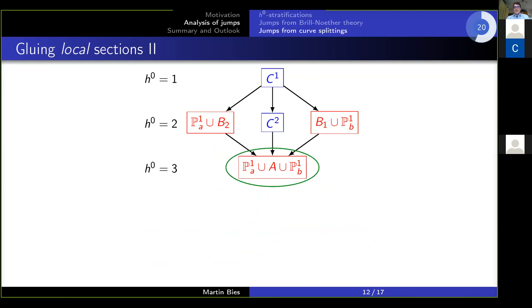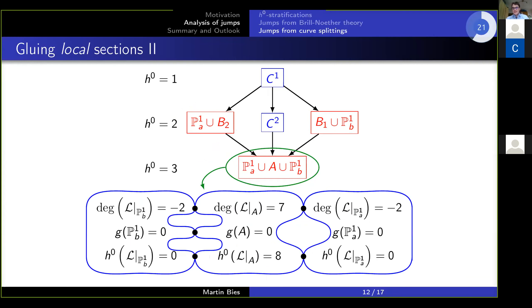Another example. Let me now zoom into the bottom case. In this case, it's three P^1s intersecting in a total of five points. Again, on the left, I find no sections. On the right, I find no sections either. Or to be more precise, when I say no sections here, I mean the section is identically 0 on the right components here as well as on the left component.